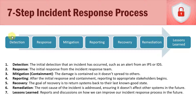The first step is detection. Like its name implies, it's detecting that an incident has occurred. An example of this would be an alert from an intrusion prevention system or an intrusion detection system. It could also be a user calling into our help desk saying that an incident has occurred. This is all part of the initial detection, letting us know that we need to respond to a potential incident.